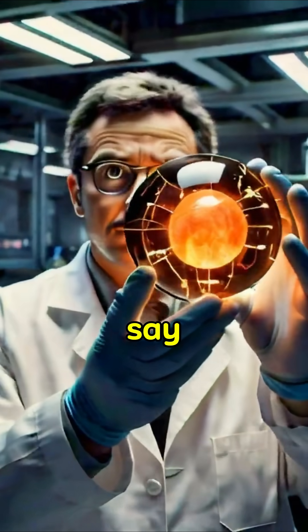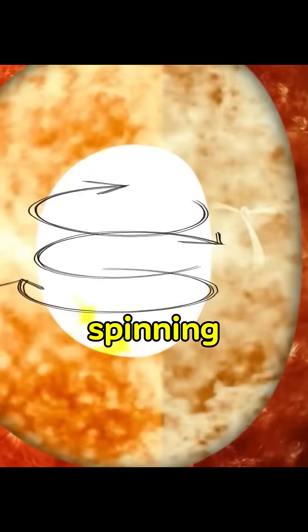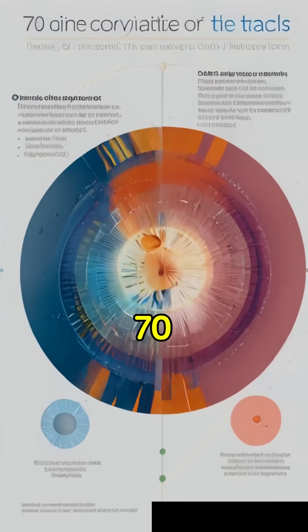But here's the twist. Scientists say the inner core might have stopped spinning, or even started spinning in reverse. It's all part of a 70-year cycle.